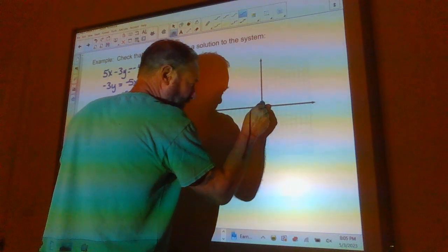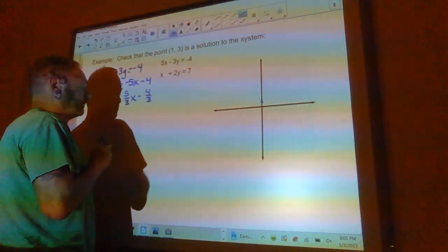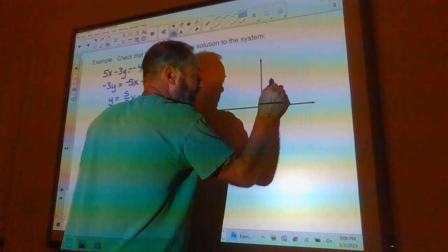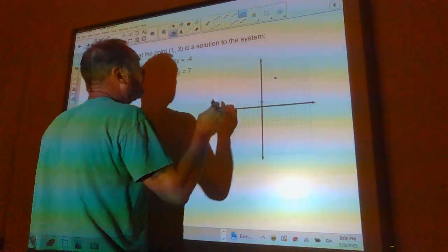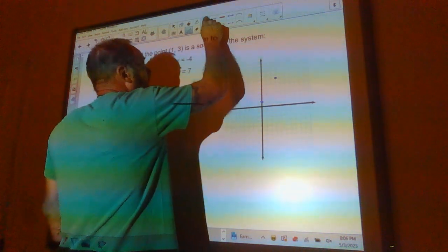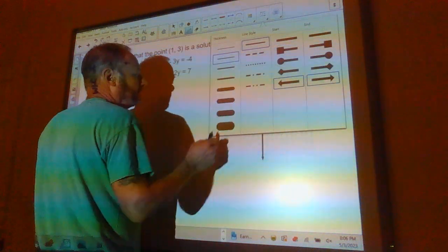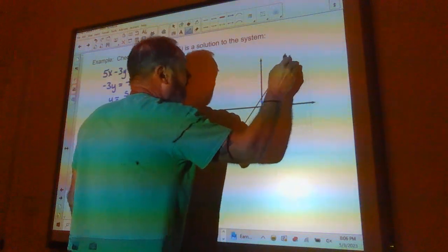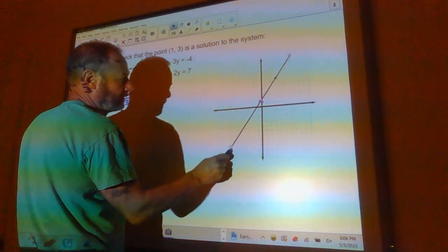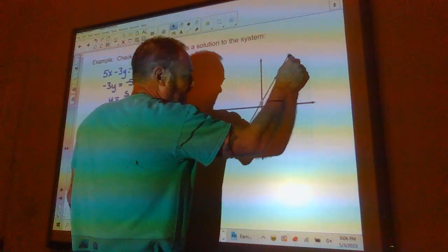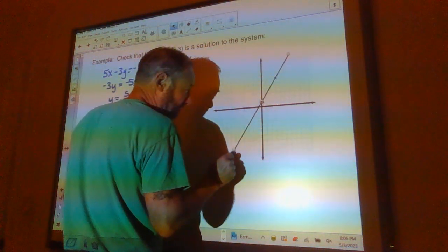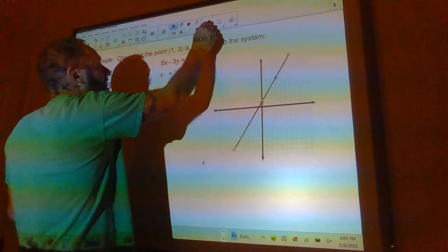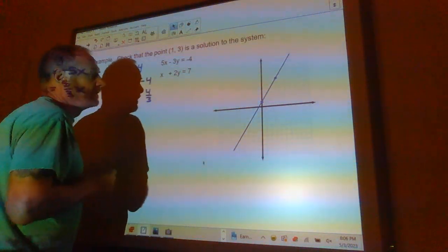So 4 thirds is going to be right about there. I'm going to rise 5, run 3. 1, 2, 3, 4, 5. 1, 2, 3 is going to be right about there. We'll go ahead and make a line. The thing about graphing is you really got to get the graph to be exact. So there's my first line.